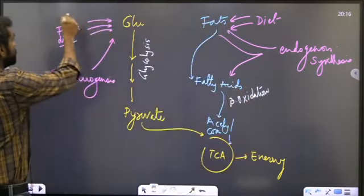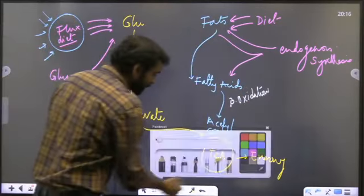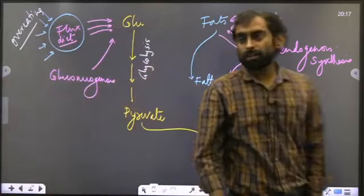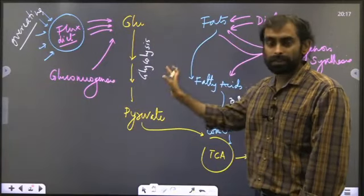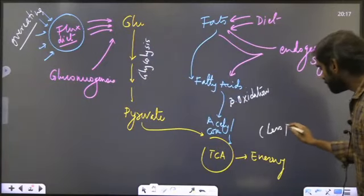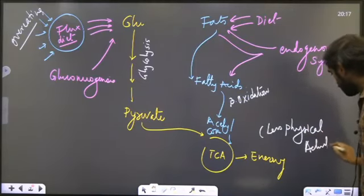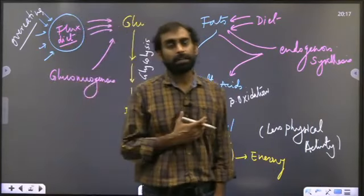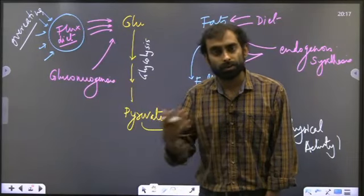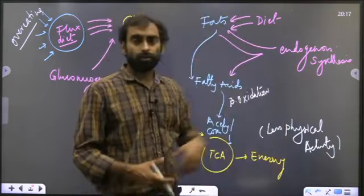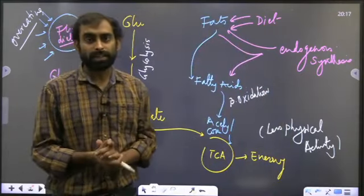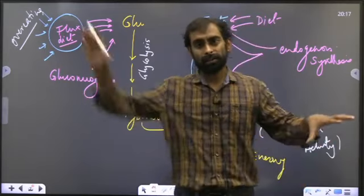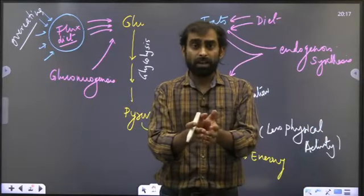At the same time, you have fats being consumed. They turn into fatty acids, circulate in the form of chylomicrons, then get broken down into acetyl coenzyme A and integrated into TCA cycle to generate energy. This is the basic energy metabolism in your body.